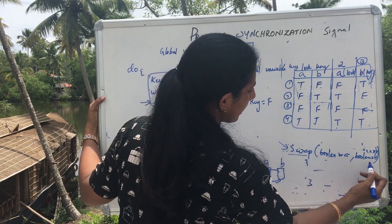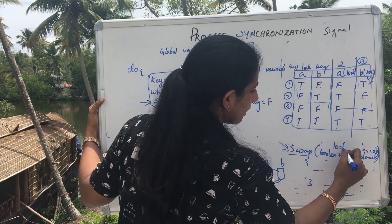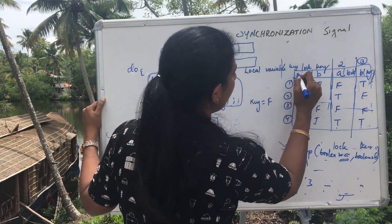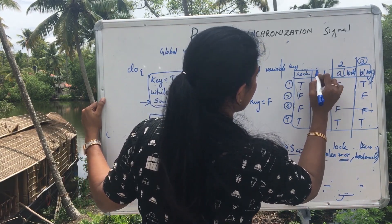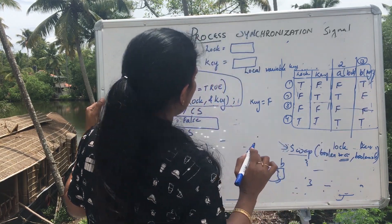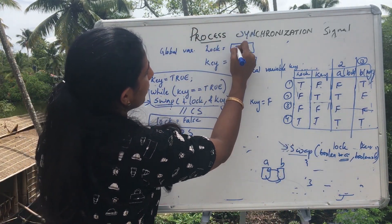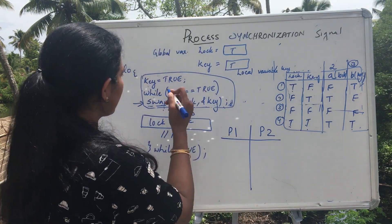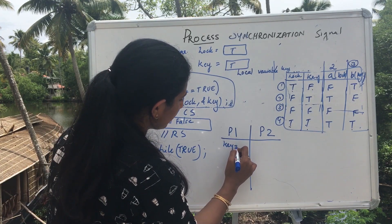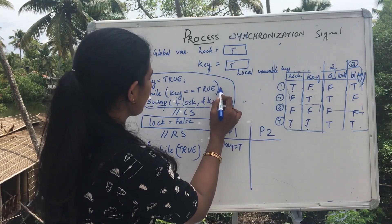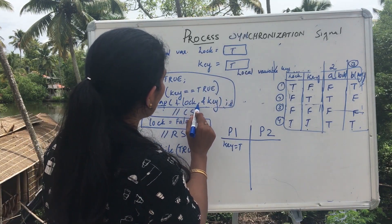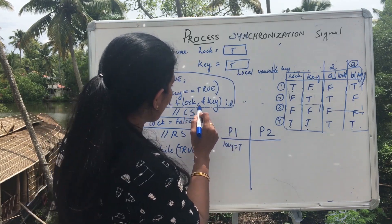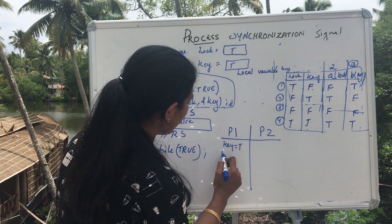The swap function is called with lock as star a and key as star b. Wherever a appears I replace it with lock, and wherever b appears I replace it with key. Now, initialize the lock value to false. Let me take two processes P1 and P2 competing for the critical section, starting with P1. P1 sets its key equal to true. Since key equals true, while key equals true is satisfied, P1 enters the swap function with lock and key, checks the values, and swaps them.